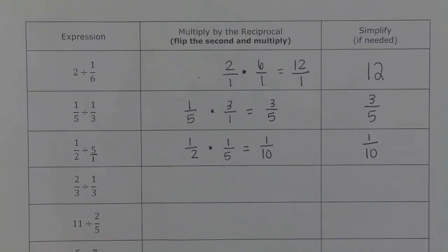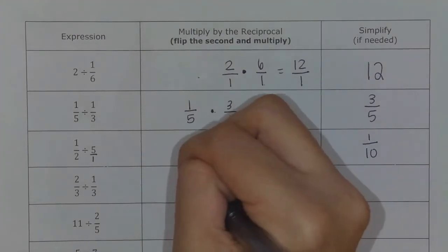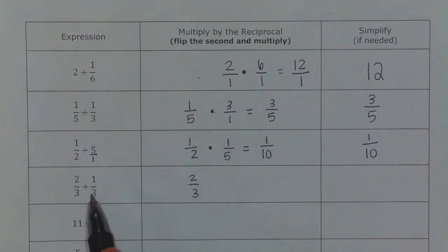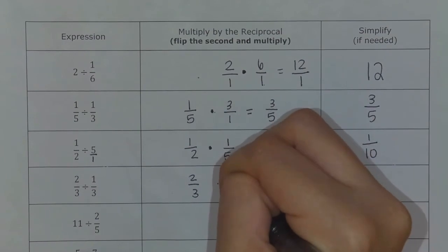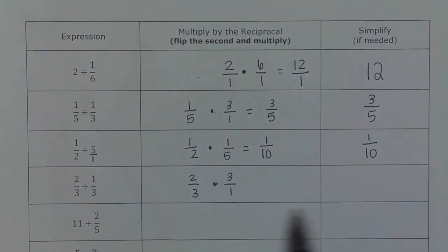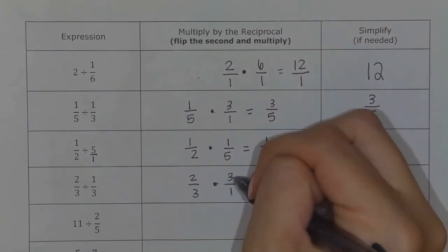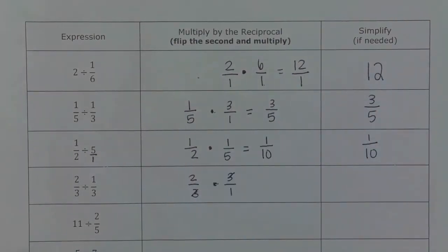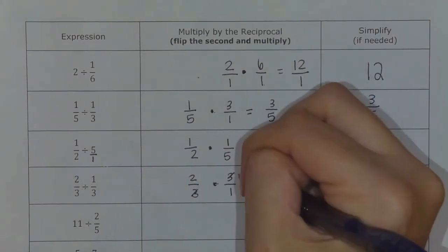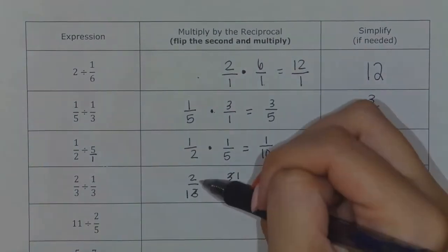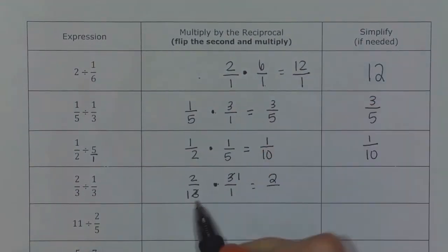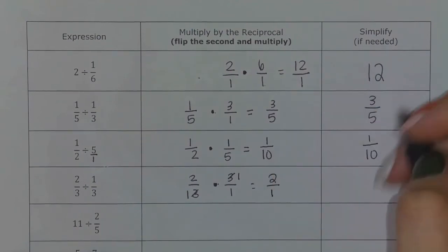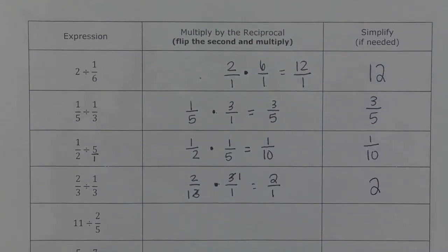The next one is two-thirds divided by one-third. Keep it as two-thirds, flip the second fraction so it becomes three over one, and then multiply. I can actually cross-simplify here — my threes are both divisible by three, so three divided by three becomes one. Then two times one gives me two, one times one gives me one, which simplifies to be two.